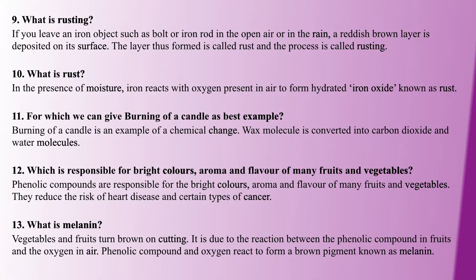What is melanin? Melanin is what makes fruits and vegetables brown. This is because the fruit's phenolic compounds react with oxygen in the air. The phenolic compounds react to form a brown pigment — that is melanin.